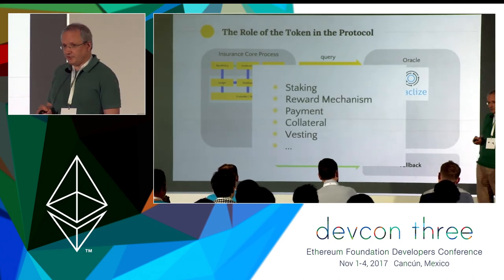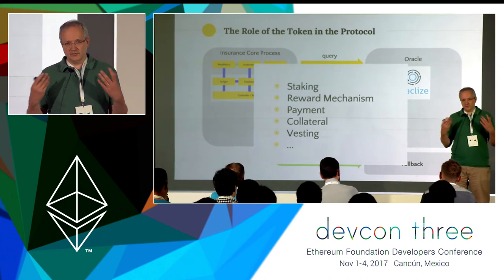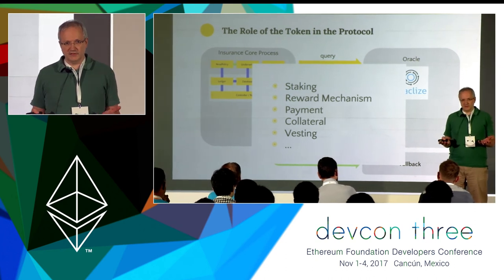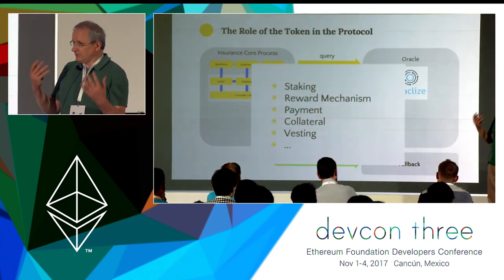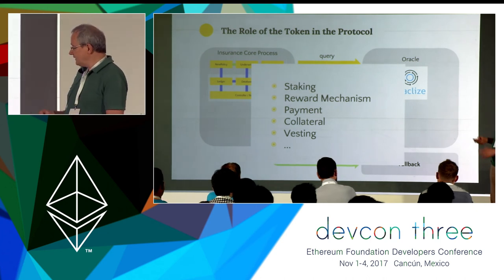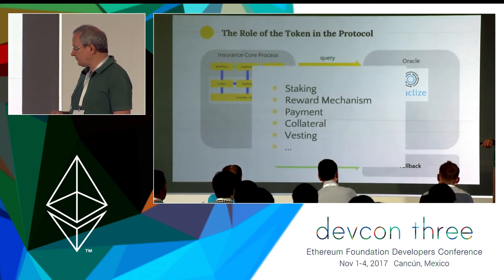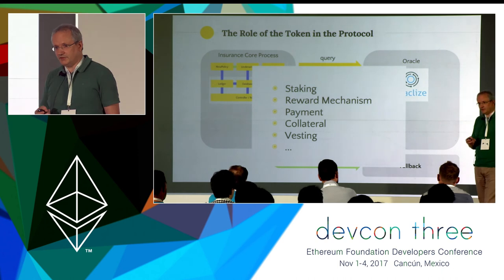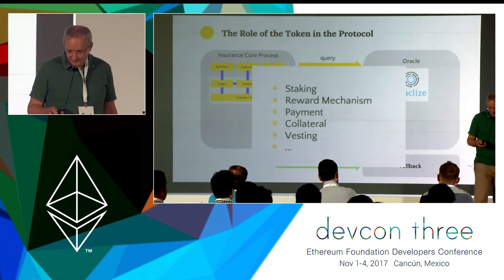We have other mechanisms as well. Instead of staking, we can reward somebody for behaving properly — if you deliver in time, you get an additional reward. We can of course use our tokens for payments, for staking collateral, and for vesting. There is another point I'll introduce in the next slide.